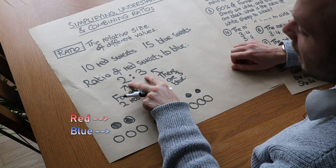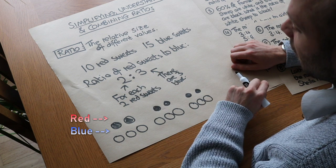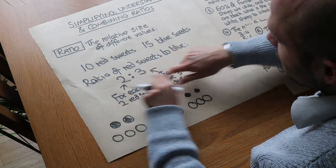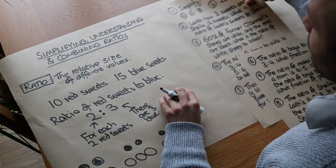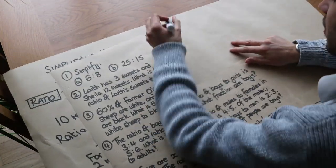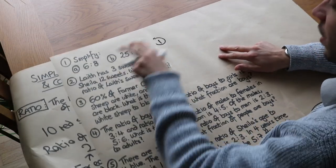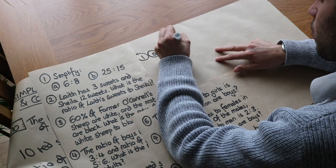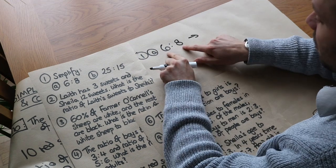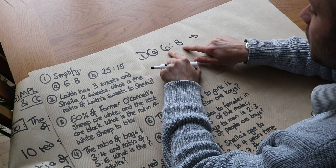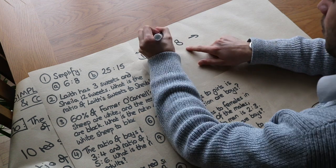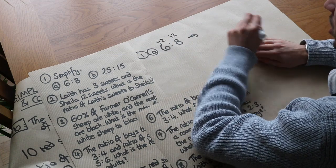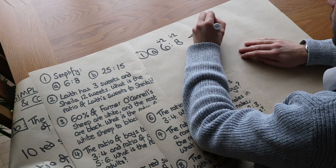So I can simplify a ratio in the same way as I can simplify a fraction — I can divide or times these numbers by whatever I like as long as it's the same number. So if we go to these first few questions: if I want to simplify 6 to 8, well they both have a common factor of two, so I divide both of them by two. And that gives me a ratio of 3 to 4.